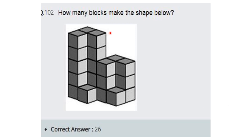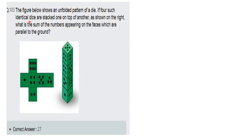The next question asks how many blocks make the shape. Counting systematically: one column contains 5 cubes, and there are three identical such sections — 5 × 3 = 15. Then counting the remaining blocks: 16, 17, 18, 19, 20, 21, 22, 23, 24, 25, and 26. The total is 26 blocks.